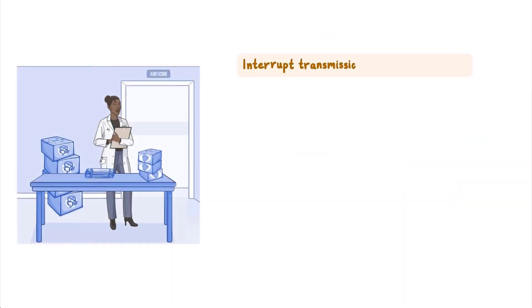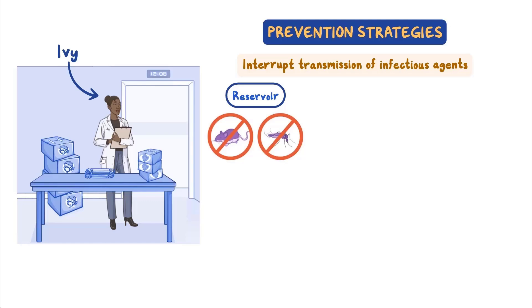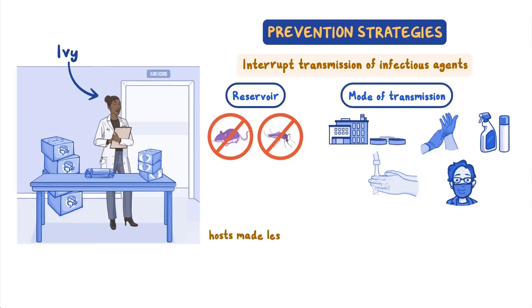To interrupt transmission of infectious agents, infection prevention specialists like Ivy use prevention strategies to break different links in the chain. For example, rodent and mosquito control can remove reservoirs and vectors. Wastewater treatment, food preparation regulations, hand washing, mask wearing, surface cleaning, and disinfection are all examples of prevention measures based on modes of transmission. Hosts can also be made less susceptible through vaccination.